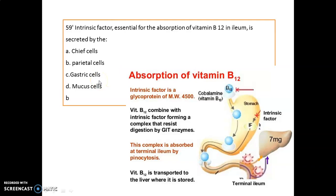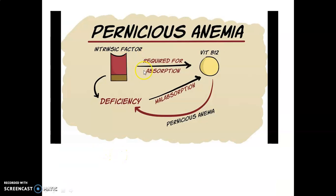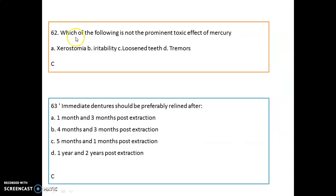The enzyme responsible for dissolving blood clots is plasmin. Pernicious anemia is caused by malabsorption of Vitamin B12. Since intrinsic factor is required for Vitamin B12 absorption, its deficiency causes malabsorption of Vitamin B12. Regarding mercury toxicity, 'lucidity' is not a prominent toxic effect of mercury — the other three options are prominent toxic effects.